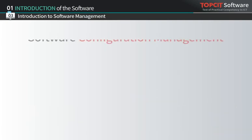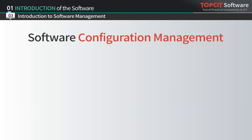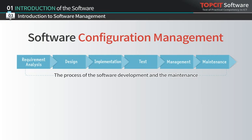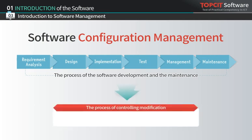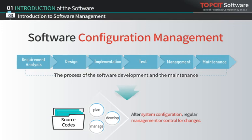The next activity is software configuration management. In the process of developing or maintaining software, the change control procedure is very important to manage artifacts from software development phases and to achieve high quality software. Software configuration management is an activity that builds system configuration by planning, developing, and managing documents or source codes during software development or maintenance. It also regularly manages and controls series of changes to them.